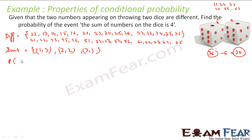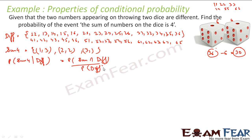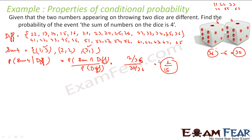So my condition is: find the probability of sum is 4 given the numbers are different. This is nothing but the probability of (sum ∩ different) divided by the probability of the different set. Looking at the intersection, (1,3) is there — yes; (2,2) is there — no, it's excluded; (3,1) is there — yes. So there are 2 common elements. The probability of (sum ∩ different) will be 2 by 36, and the probability of different is 30 by 36. So what you get is 1 by 15. That is the probability of sum equal to 4 given that the numbers are different.